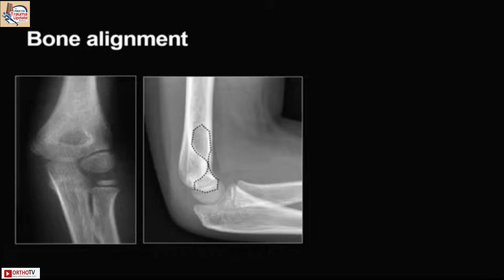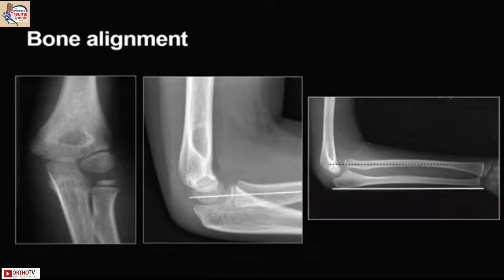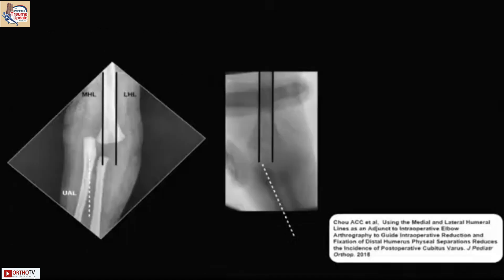Look for the teardrop — whether it's nicely formed or shows any change — and then look for the radiocapitular line. Also look for something called the coronoid line, which is similar to the Shenton line in the hip. It runs continuously with the proximal volar coronoid and with the anterior humeral line as a smooth curve. If you see any change, there is probably a dislocation or something else going on. Also look at the ulnar bow as described by Mubarak — it should be touching dorsally from distal to proximal.